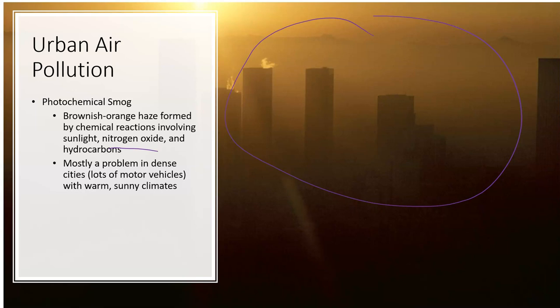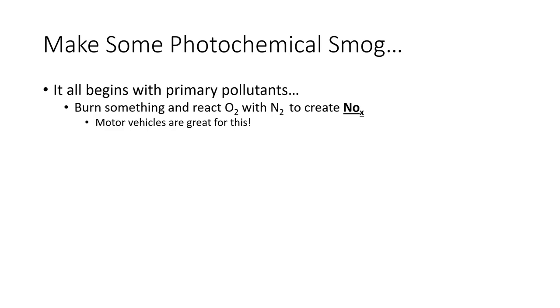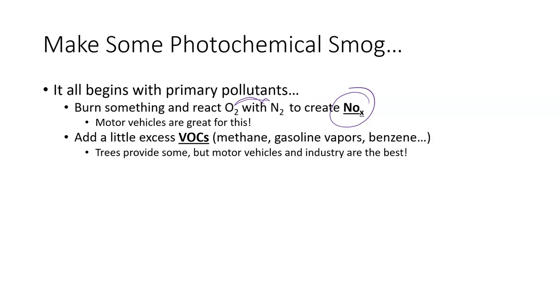Photochemical smog is mostly a problem in dense cities with lots of motor vehicles contributing those primary pollutants, and also more of a problem in warm, sunny climates because it is photo-catalyzed — caused by sunlight. Whenever we burn something, we're reacting with oxygen, and that heat can cause nitrogen gas and oxygen gas to react to form various nitrogen oxides. Motor vehicles are really good at that; since nitrogen is present with the oxygen coming in through the carburetor, we do produce nitrogen oxides.